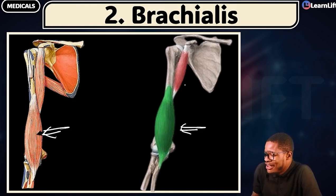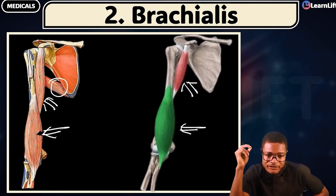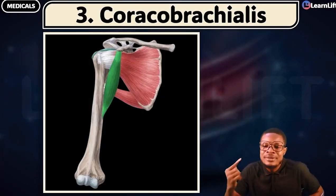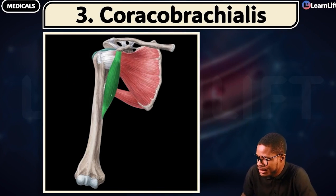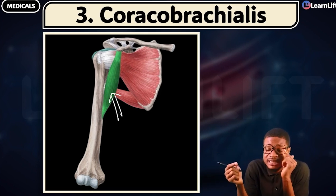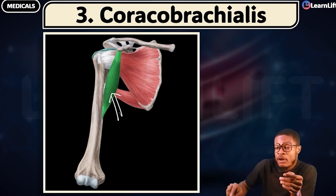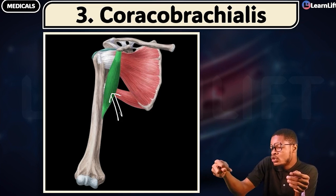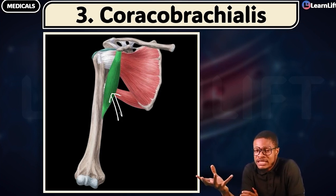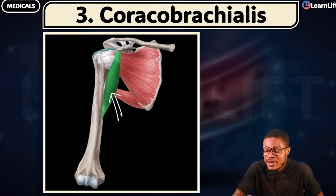What about this guy here? That's the coracobrachialis — you can see it in green. How does the name coracobrachialis come about? It originates from the coracoid process of the scapula. 'Brachialis' means it is going to the brachium — the arm. So it runs from the coracoid process of the scapula to the arm. That's your coracobrachialis.